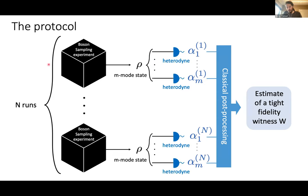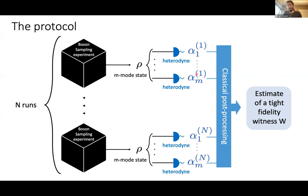The protocol is essentially the same setup as tomography: you repeat many runs of your boson sampling experiment. Each time you get an M-mode state, you measure all the single modes with heterodyne detection, obtaining a bunch of complex numbers. You collect all the data, do some classical post-processing — where the magic happens — and this gives you an estimate of the tight lower bound on the fidelity. If you trust heterodyne measurements, you obtain a certificate on the total variation distance between the probability distribution of the real state and the ideal boson sampling one.